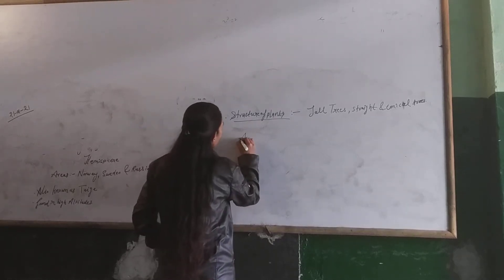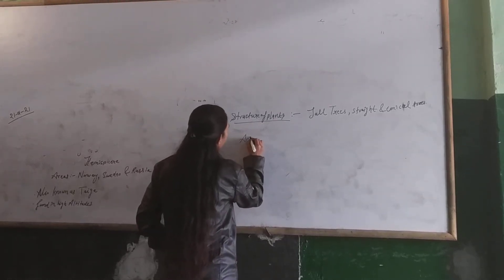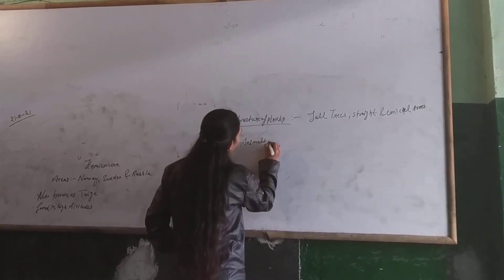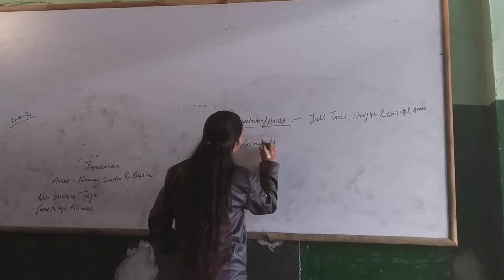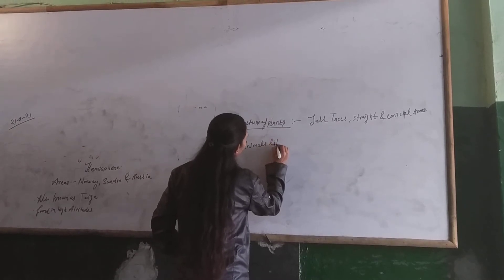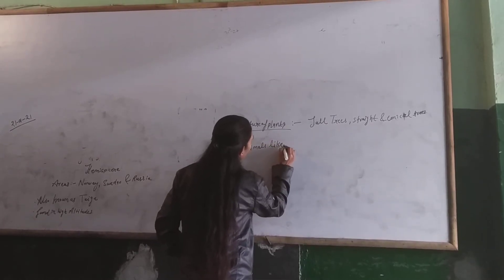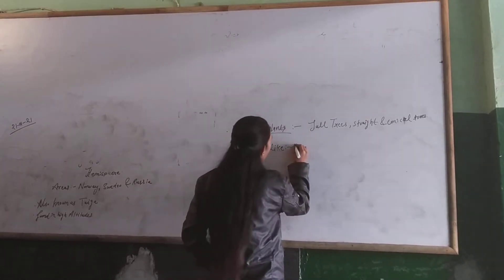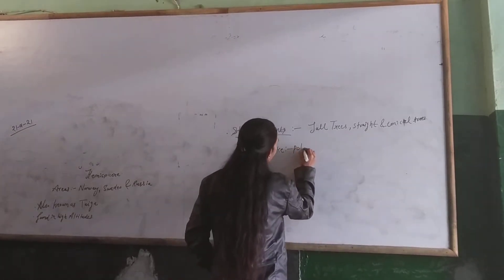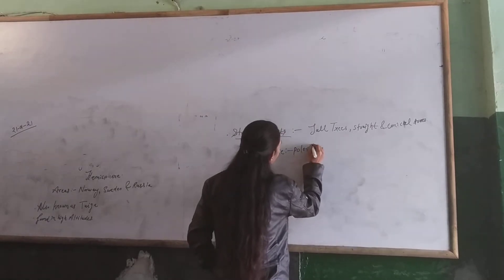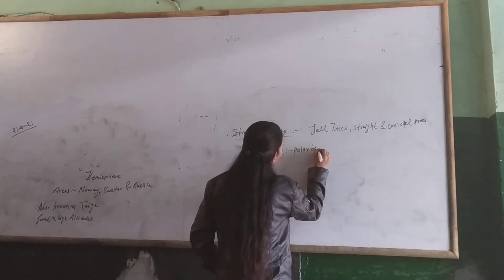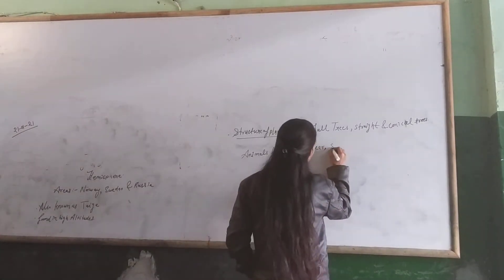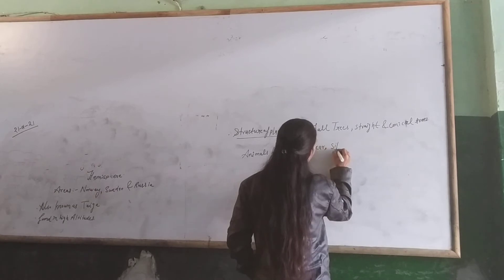The next heading is animal size. The first one is the polar bear and the other one is the silver fox.